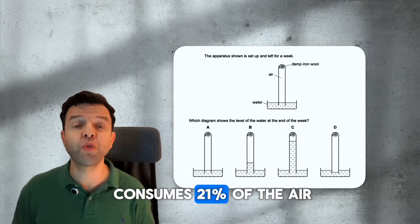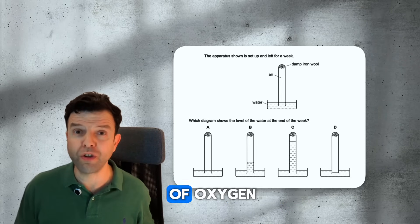When iron rusts, it consumes 21% of the air, that is the percentage of oxygen.